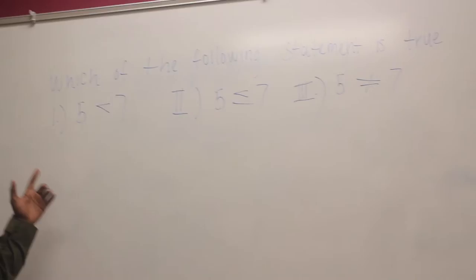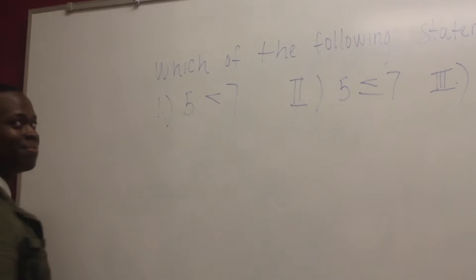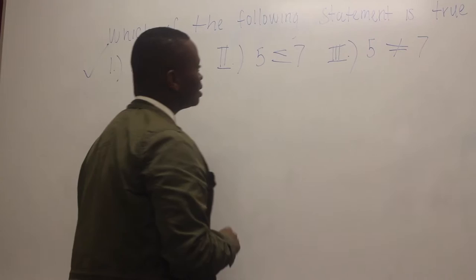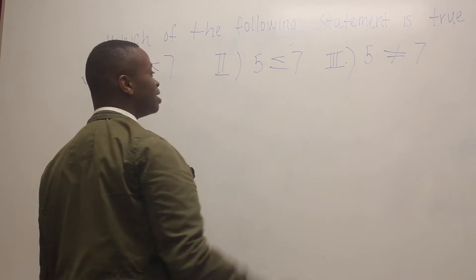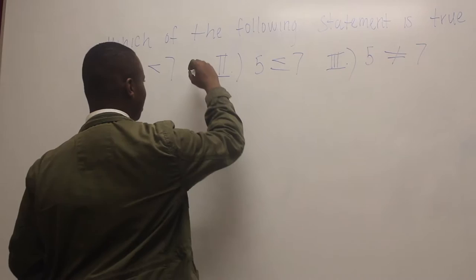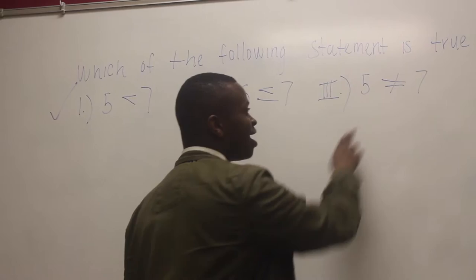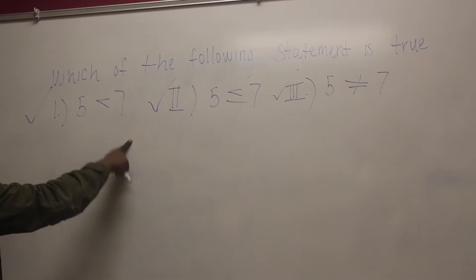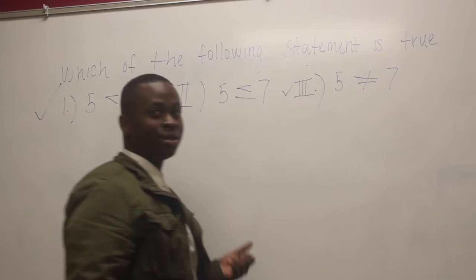This problem will be determining which of the following statements is true. The first statement is: five is less than seven. Is five less than seven? Yes, so obviously that statement is true. The next one is: is five less than or equal to seven? Five is less than or equal to seven because five is less than seven, so that one is also true. The third statement: is five equal to seven? Five is not equal to seven, so that statement is also true. The conclusion is that five is less than seven, five is less than or equal to seven, and five does not equal seven — and they're all true.